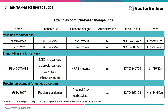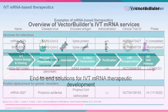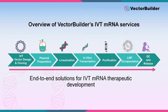RNA therapeutics have revolutionized the field of medicine by offering a versatile platform for rapidly developing targeted therapies and vaccines. Among the pioneering examples, mRNA-1273 and BNT-162b2 stand out as groundbreaking COVID-19 vaccines developed by Moderna and Pfizer. These vaccines utilize modified mRNA molecules to encode the spike protein of the SARS-CoV-2 virus, stimulating the immune system to generate a protective response without the use of live virus particles. mRNA therapeutics are also being investigated in clinical trials for the treatment of cancer and for protein replacement. VectorBuilder offers end-to-end solutions for IVT mRNA therapeutic development, empowering researchers and pharmaceutical companies to navigate the complex landscape of mRNA-based treatments with confidence and precision.